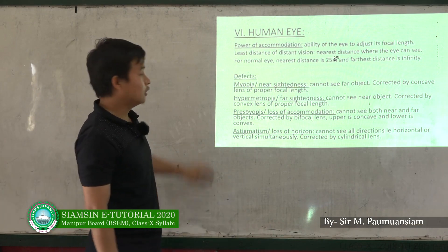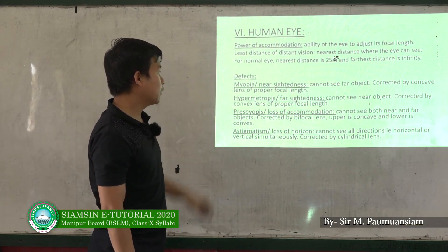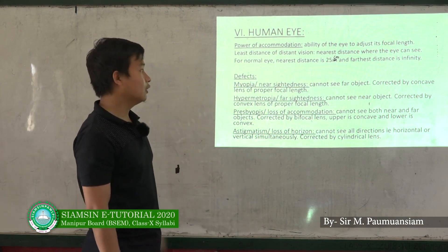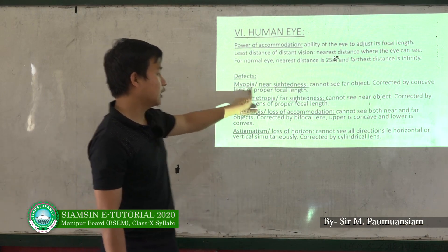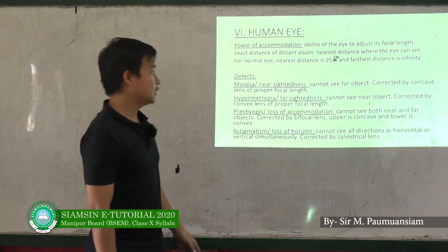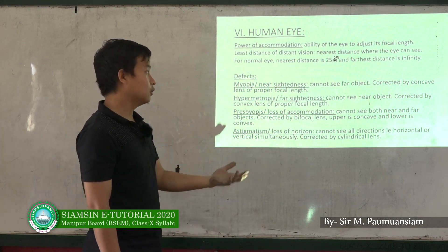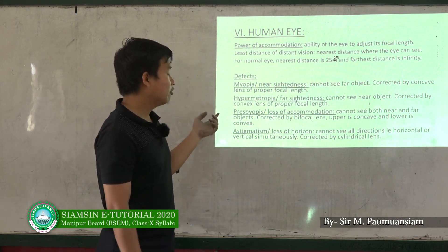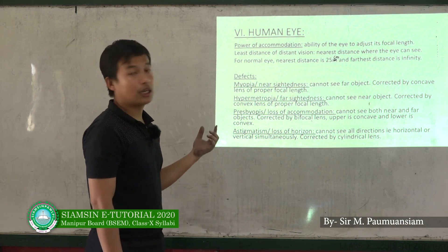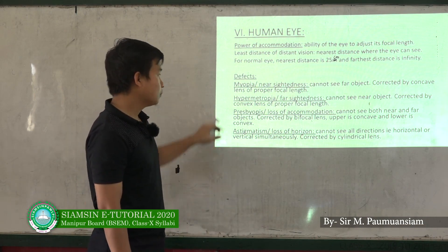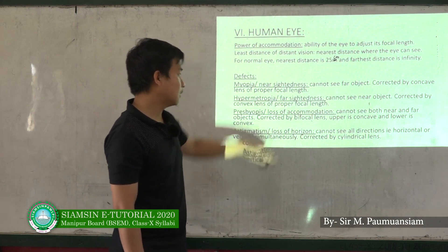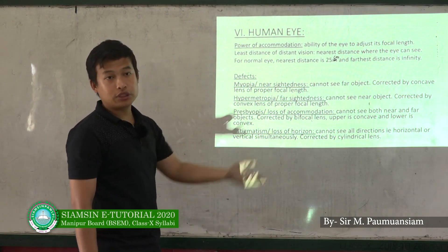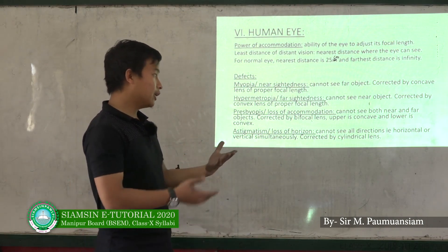Defects of the eye. The first defect is Myopia, also known as Nearsightedness. In Myopia, a person cannot see far away objects clearly. The second defect is Hypermetropia, also known as Farsightedness.